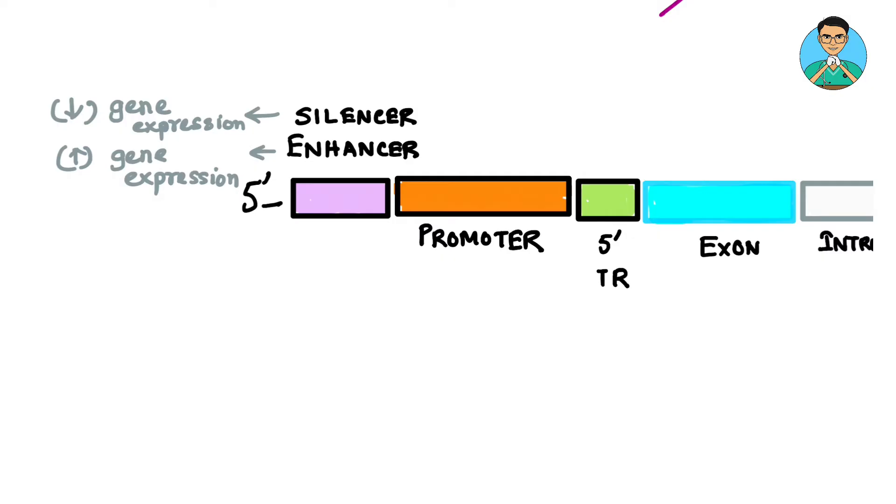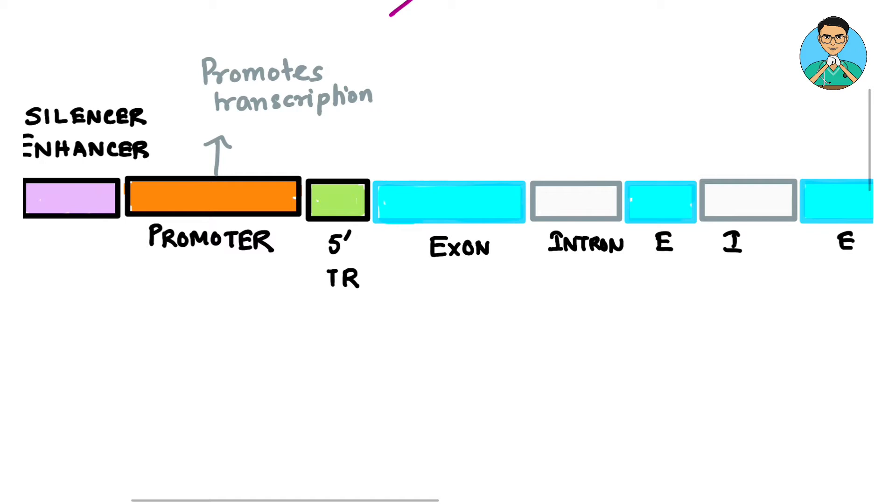After silencer or enhancer we have a promoter sequence. Now this promoter sequence promotes the transcription. And this is the sequence where our RNA polymerase, RNA polymerase 2 and other transcription factors bind. So this is the work of promoter.